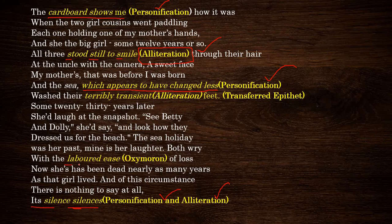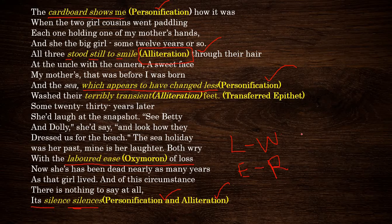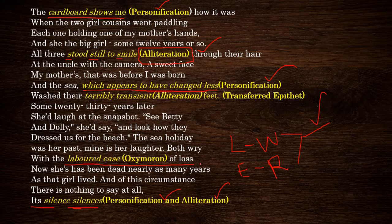Now here is the important line: 'labored ease of loss.' Labored means working hard and ease means relaxing. When these two opposite things appear in the same line, that kind of sentence is called an oxymoron — like black and white, or day and night. That is why 'labored ease of loss' is called an oxymoron.